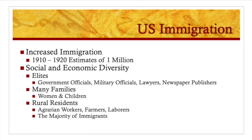American farms, because of increased technology, had more year-round need for farming. The development of sugar beets, cotton, and vegetables in California, Colorado, and Texas drove demand for more migrant and agricultural workers. Between 1910 and 1920, estimates suggest about 1 million Mexicans came into the United States, and they were not all peasants. There was a lot of social and economic diversity — elites, families, and rural residents — though the majority were agrarian workers or laborers.